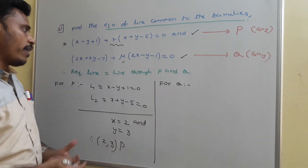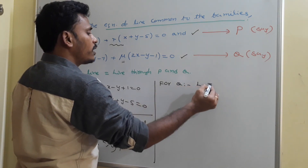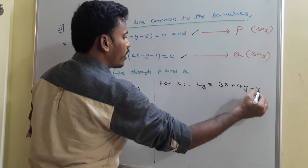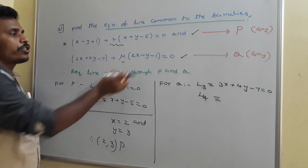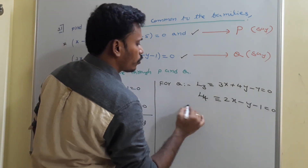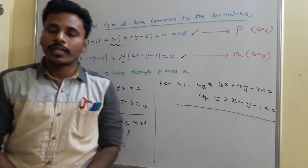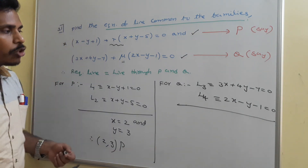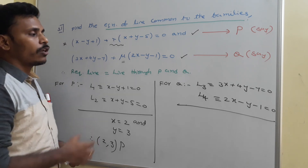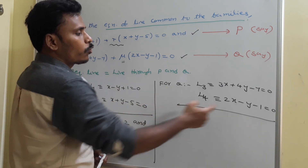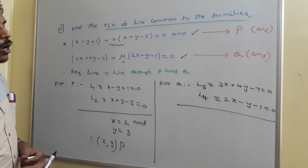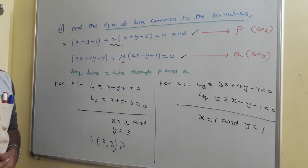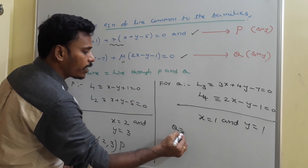Q is the point of concurrency of the second family. In the second family we have L3: 3x plus 4y minus 7 equals 0 and L4: 2x minus y minus 1 equals 0. Solving these two by elimination — multiply L4 by 4 to eliminate y — gives 11x equals 11, so x equals 1 and y equals 1. Checking: substituting x equals 1, y equals 1 satisfies both lines. So Q is (1, 1).